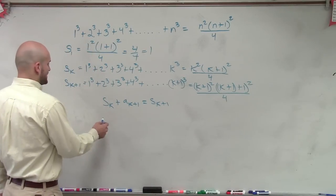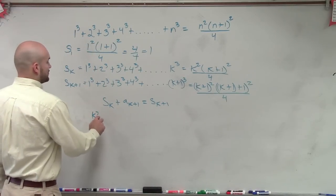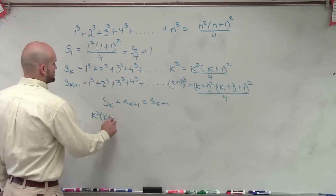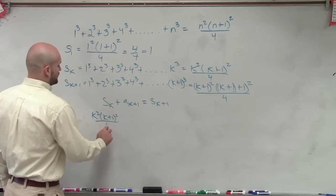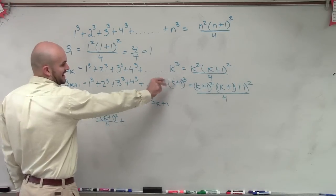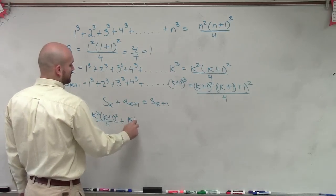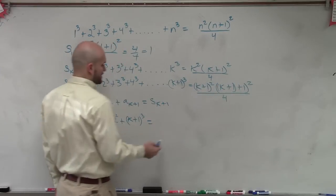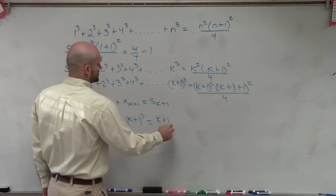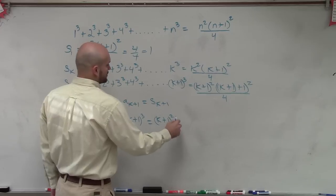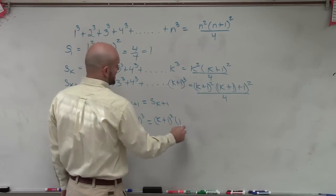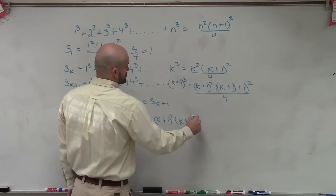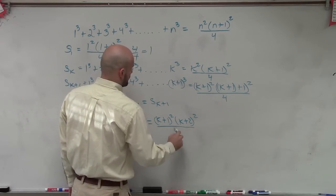So let's write it out. So we have s(k), which is k²(k+1)²/4 plus a(k+1), which is (k+1)³ has to equal this, which is (k+1)², I'll simplify that to (k+2)² all over 4.